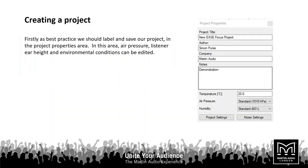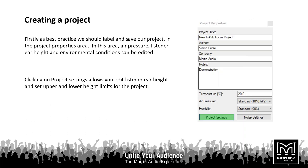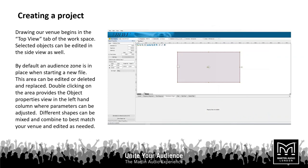The first thing we have to do is create a project. To do that, we give the project a title and set our basic parameters — air height, air pressure, temperature — I tend to leave those as defaults. Clicking on the project settings button allows you to edit listener ear height and set upper and lower height limits of the room for the project. Noise settings allows you to set a noise floor for the project.